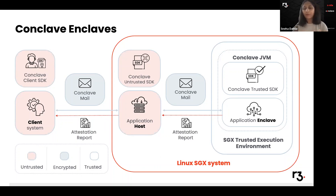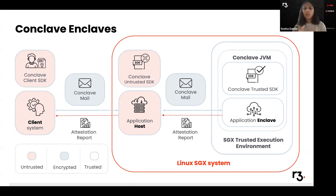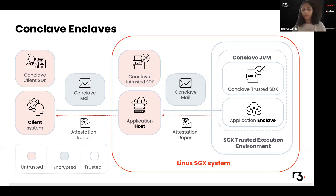Conclave supports development on all platforms: Windows, Linux, and Mac. A typical Conclave application has three components: the client, the host, and the enclave. The host is the entity that takes care of loading the enclave; it is typically an application using a standard JVM like HotSpot, and host applications are considered completely untrusted. The client interacts with the enclave via the host. Conclave uses mail for sending messages from client to enclave and back, and this mail API makes it easy to deliver encrypted messages so that only the expected receiver can read the message.